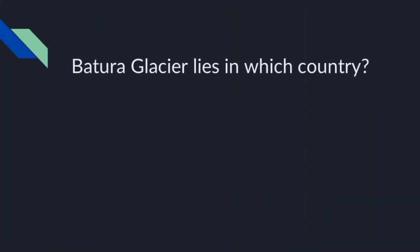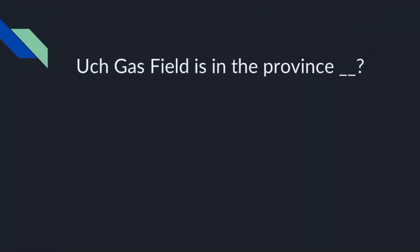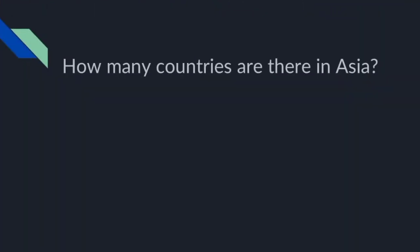Batura Glacier lies in which country? Puch Gas Field is in the province of Balochistan. How many countries are there in Asia? 48 countries.